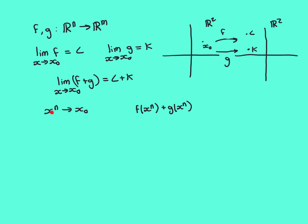Take a domain sequence xn that converges to x0, where none of the terms equal x0 itself. The image sequence for the function f+g applied to this domain sequence is simply f(xn) + g(xn). So the first term is f(x1)+g(x1), the second is f(x2)+g(x2), and in general the nth term is f(xn)+g(xn).